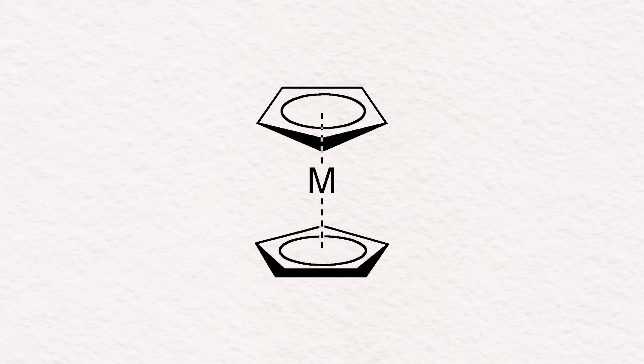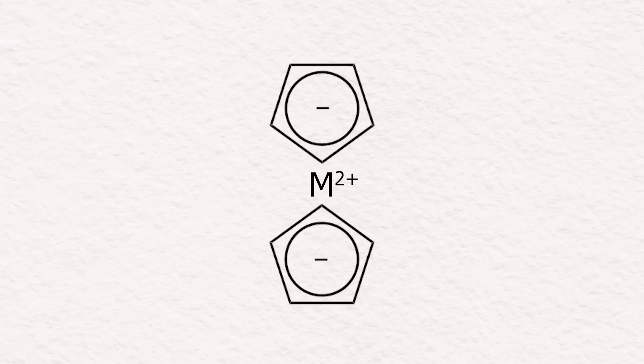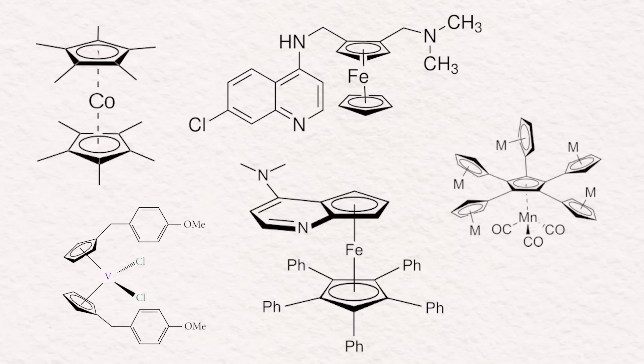Metallocenes are organometallic compounds that generally consist of two cyclopentadienide ions with a metal sandwiched between them. There are many derivatives of metallocenes, but there aren't really any metallocenes that have a big purpose in chemistry or medicine.